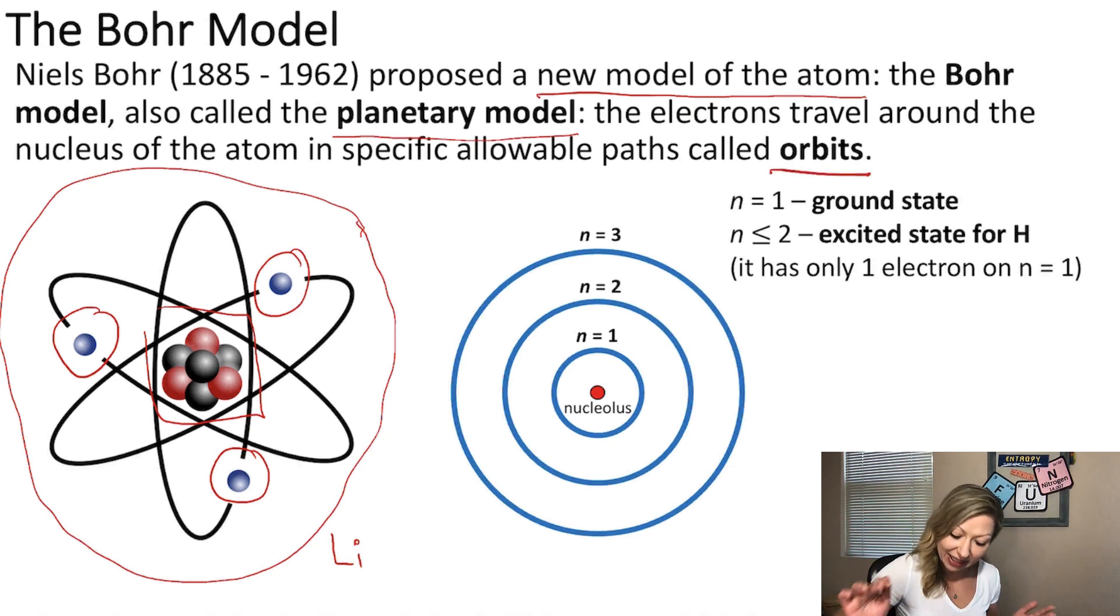If we pancake this on a paper, this is how it's going to look like. We're going to have the nucleus in the middle and then these orbits right here with N equals 1, N equals 2, and N equals 3.